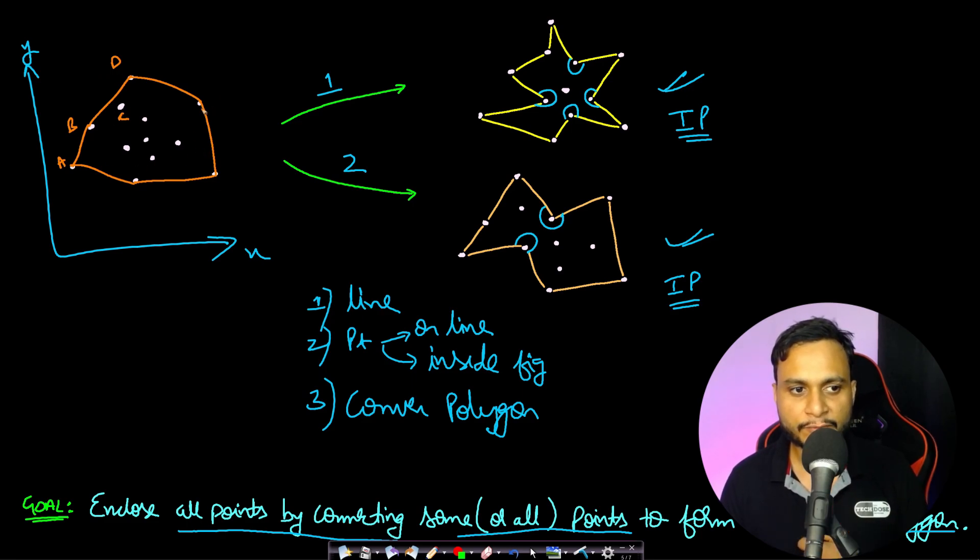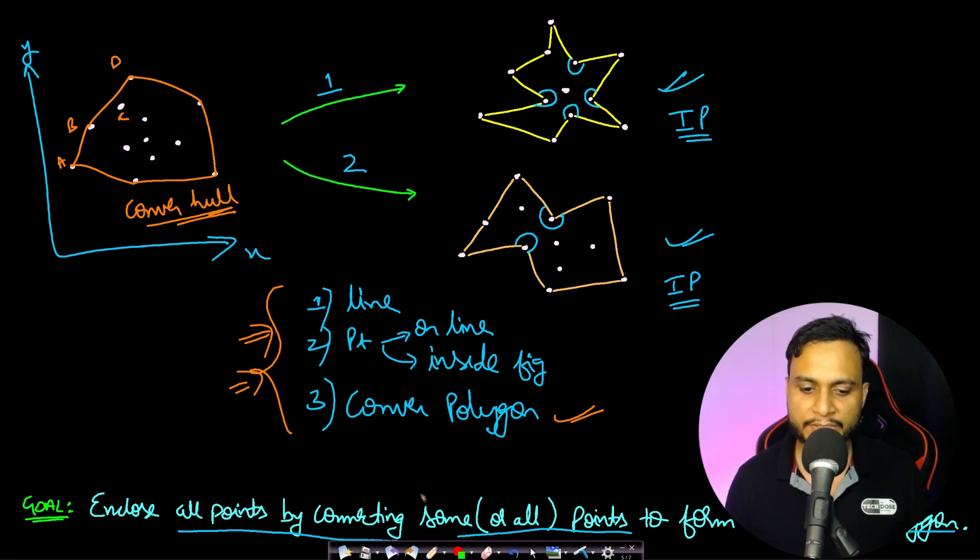So this is the visual way in which you can actually enclose a set of points using a convex polygon and all these three conditions will be followed. Such kind of enclosed convex polygon is known as a convex hull which actually is drawn by following all these three conditions. So I think you got an idea about what is a convex hull. If you still have confusion, let's take an example and try to understand what is a convex hull.